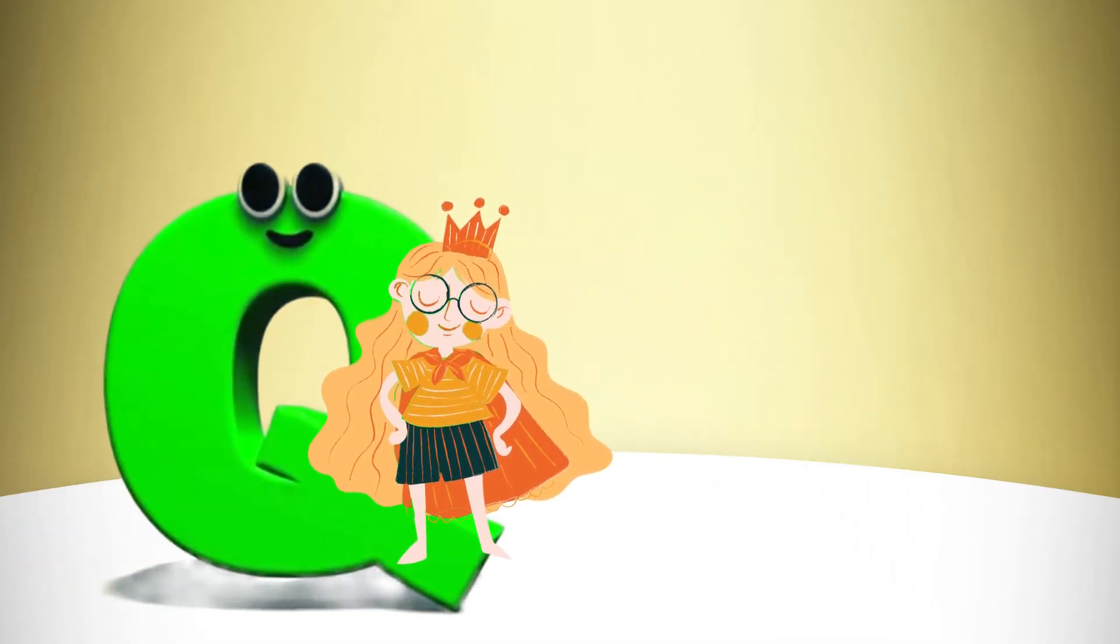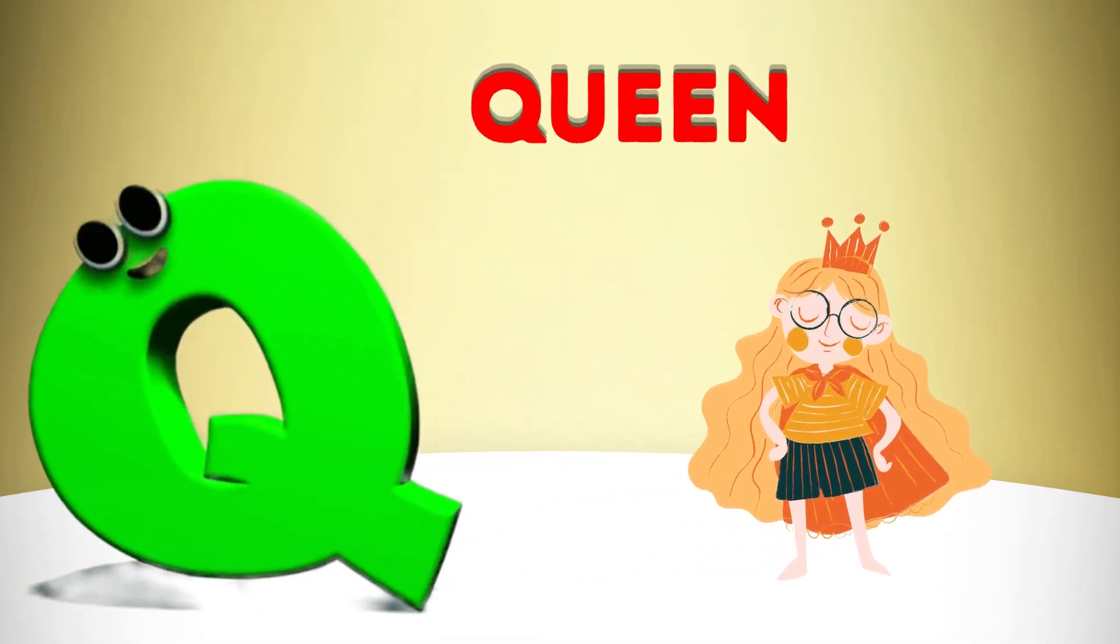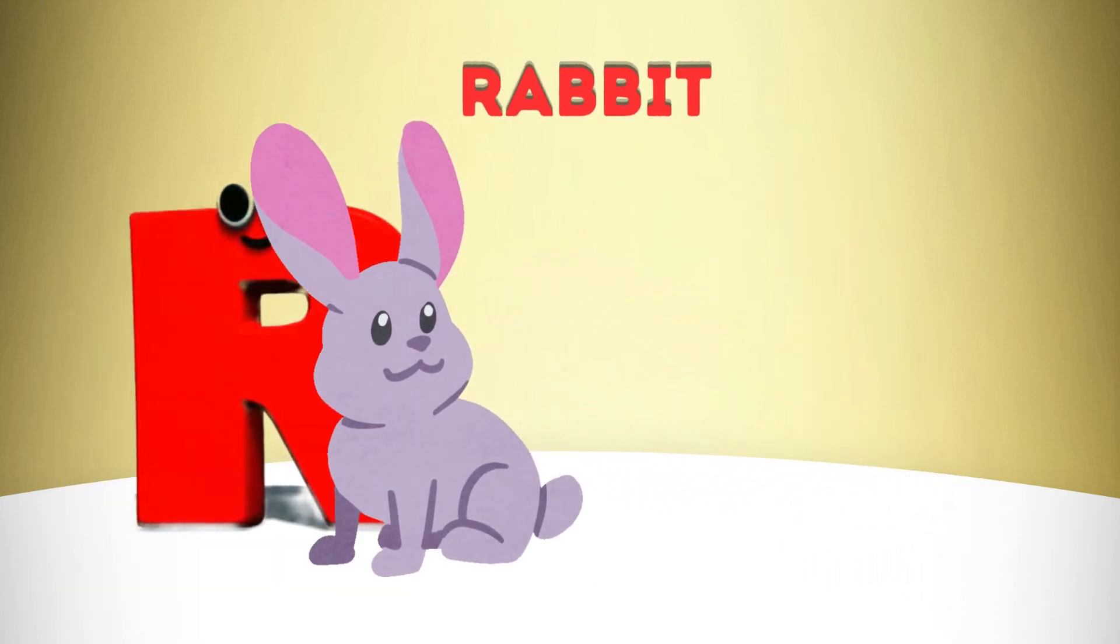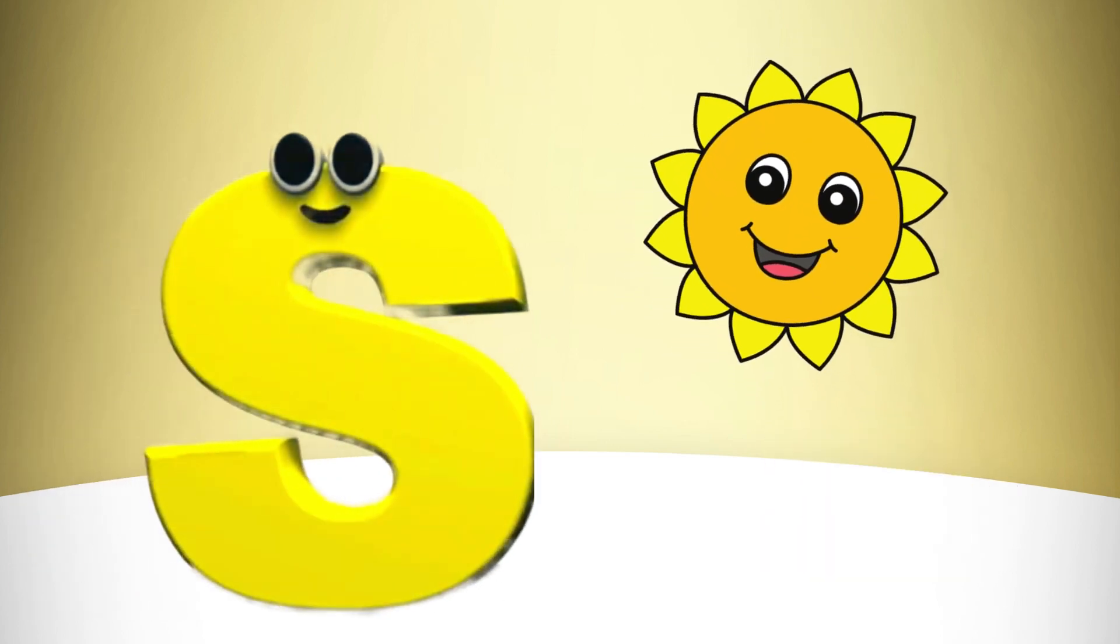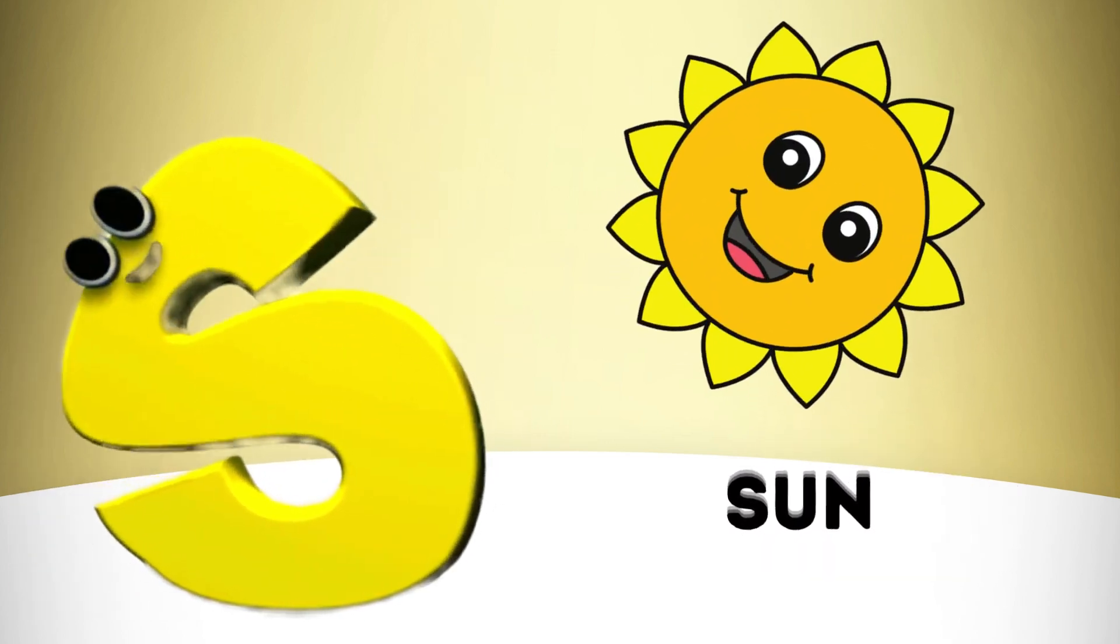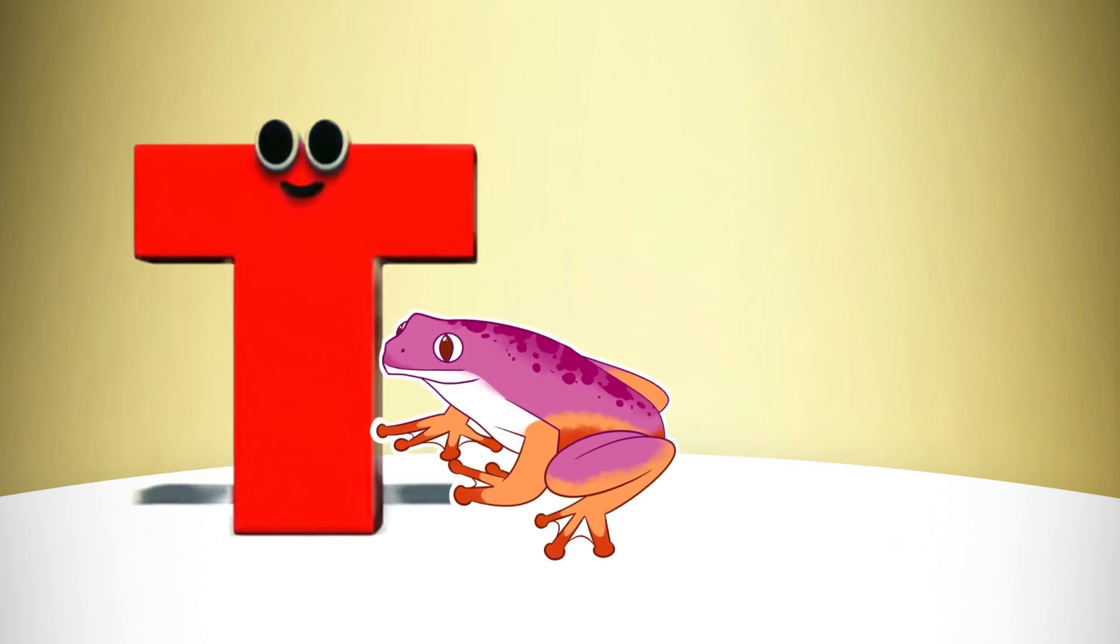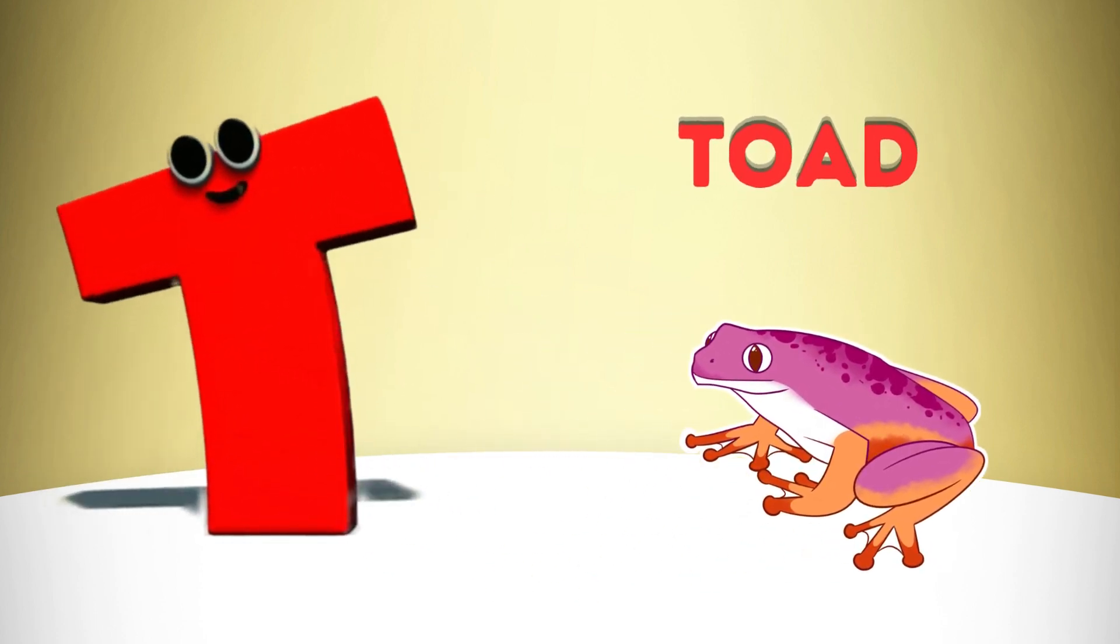Q is for Queen, Q-Q-Queen. R is for Rabbit, R-R-Rabbit. S is for Sun, S-S-Sun. T is for Toad, T-T-Toad.